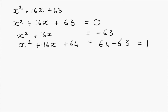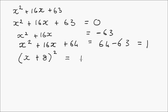And 64 minus 63 equals 1. This is a perfect square now. We can rewrite this as x plus 8, all squared, equals 1. Let's verify: x by x is x squared, x by 8 plus x by 8 is 16x, and 8 by 8 is 64. And from the line above, the right-hand side is 1.